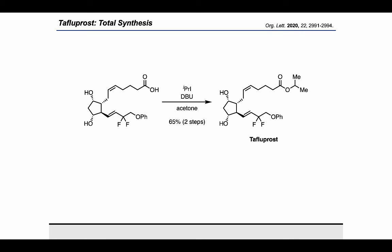I like the synthesis a lot because of the efficiency of the asymmetric Suzuki-Miyaura coupling, which allowed them to come in with a racemic building block and an achiral building block and end up with an enantioenriched prostaglandin core. That's really nice.